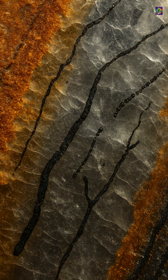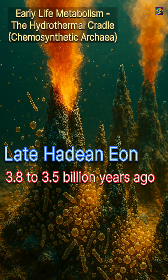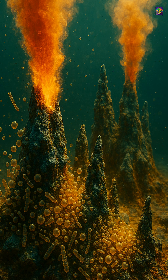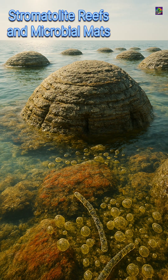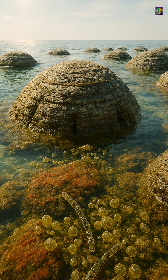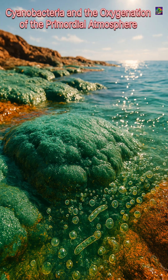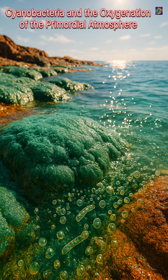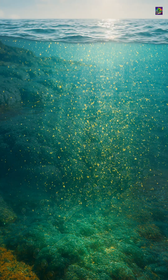The earliest evidence of life on Earth appears around 3.8 to 3.5 billion years ago, preserved as chemical signatures and microbial fossils in ancient rocks. These first living systems were bacteria-like and archaea-like cells, already running metabolism, reproduction, and chemical cycles long before anything large existed. For almost 2 billion years, Earth was a microbial planet.